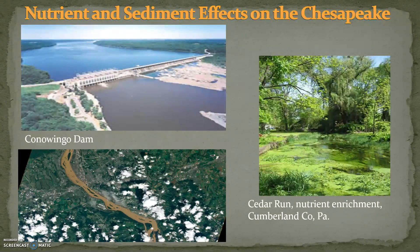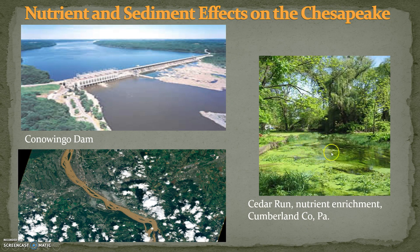The lower left picture is a sediment plume from Tropical Storm Lee and Hurricane Irene in 2011 — a satellite view near Harrisburg showing high sediment levels being carried toward the Chesapeake Bay. On the right is a picture of Cedar Run in Cumberland County, Pennsylvania, where excessive greenery indicates excessive nutrients creating algal blooms, algal mats, and duckweed in the waterway.